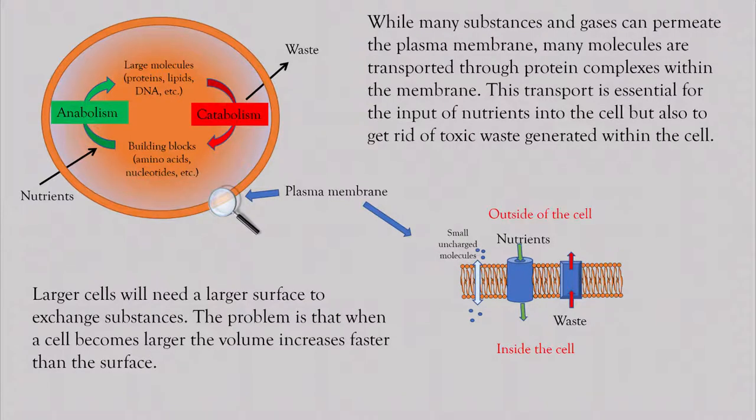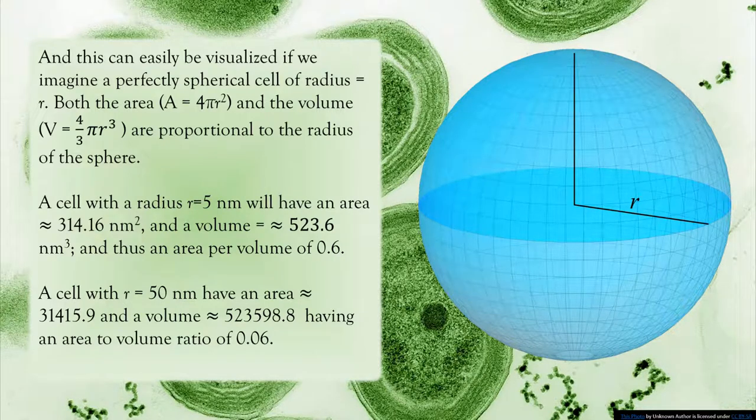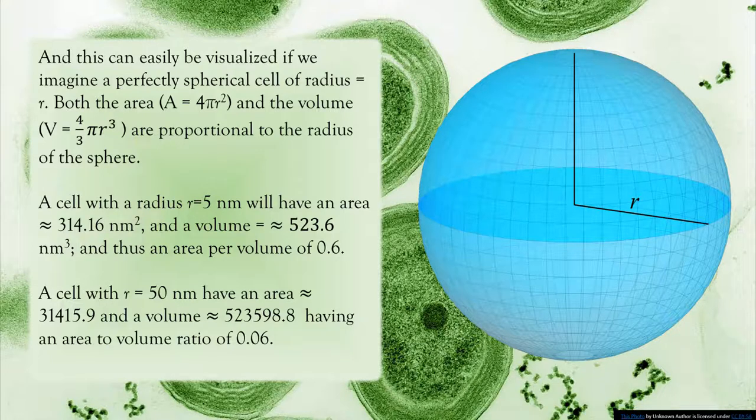Larger cells will need a larger surface to exchange substances. The problem is that when a cell becomes larger, the volume increases faster than the surface. And this can be easily visualized if we imagine a perfectly spherical cell of radius r. Both the area and the volume are proportional to the radius of the sphere.